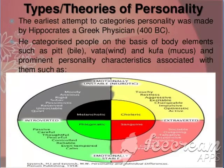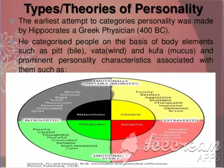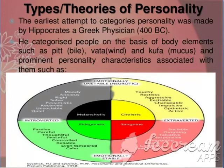Typology means ways of categorizing individuals into discrete categories or types — for example, Type A personality. In India also, Charak Samhita, the famous treatise on Ayurveda, classified people into categories of Vata, Pitta, and Kapha on the basis of three humor elements called three doshas.